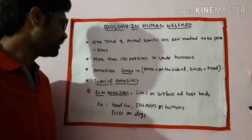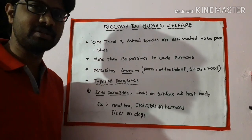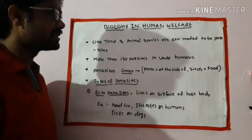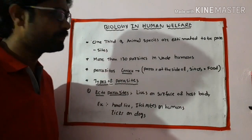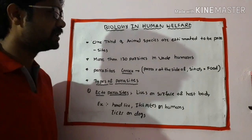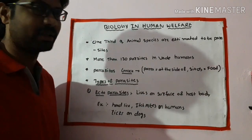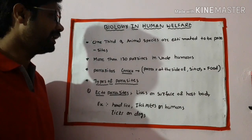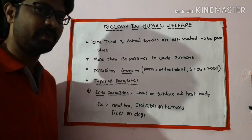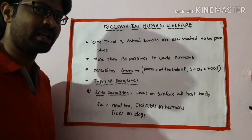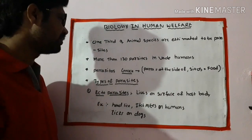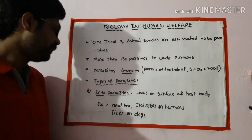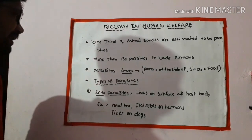Now let's talk about the types of parasites. There are two main groups of parasites.